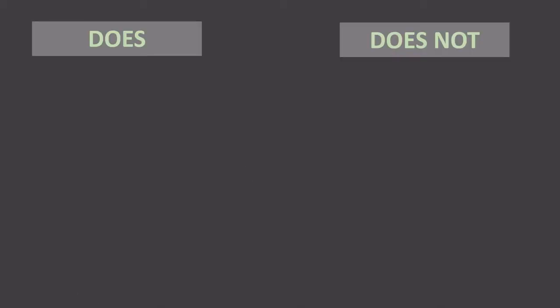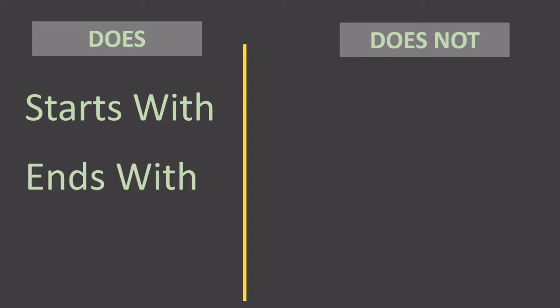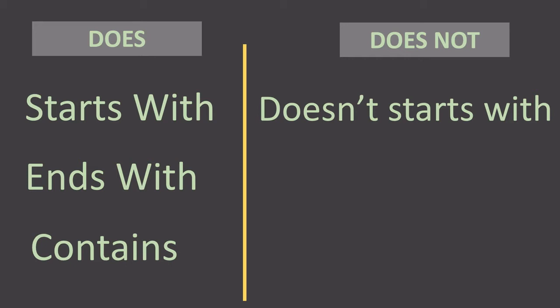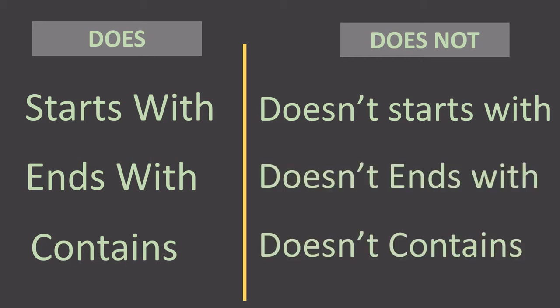Hello everyone. Today we will see the subsequent video in this series where we are learning to filter data. We're going to learn something segmented into two parts: 'does' and 'does not'. There can be situations where we want to find rows where something starts with, ends with, or contains a particular string. At the same time, we might wish to filter records where something does not start with, does not end with, or does not contain a particular string.